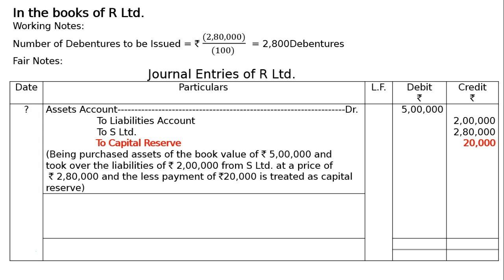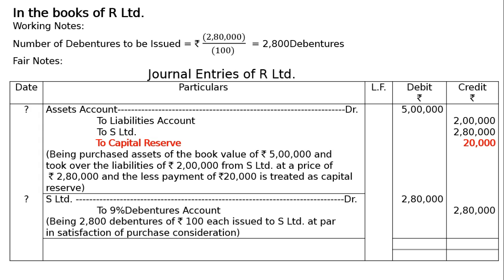Being purchased assets of book value Rs. 5 lakh and taking over liabilities of Rs. 2 lakh from Ace Limited at a price of Rs. 2,80,000, the less payment of Rs. 20,000 is treated as capital reserve. Now, to pay the vendors — Ace Limited Account debited Rs. 2,80,000 (as it was previously credited, now debited); To 9% Debentures Account Rs. 2,80,000 — being 2,800 debentures of Rs. 100 each issued to Ace Limited at par in satisfaction of the purchase consideration.